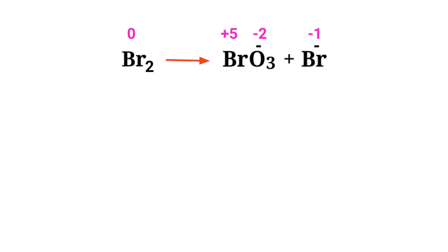In the ion electron method, one reaction is divided into two half reactions, and then they are balanced and then they are added together.